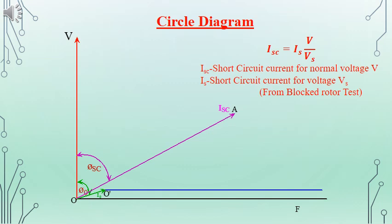For drawing the circle diagram, we require the short circuit test as well as the open circuit or no-load test results, along with the blocked rotor test results. ISC is the blocked rotor test current corresponding to the normal voltage of the machine, and we have the power factor angle on the short circuit test. I0 is the no-load current and its power factor angle is from the no-load test.